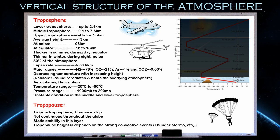The major gases in the troposphere are nitrogen at 78%, oxygen at 21%, argon at 1%, and carbon dioxide at 0.03%.